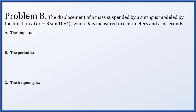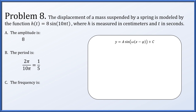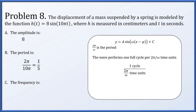Problem 8: the displacement of a mass suspended by a spring is modeled by h of t equals 8 times the sine of 10 pi t, where h is in centimeters and t is in seconds. The amplitude is 8. The period is 2 pi over 10 pi, which equals 1 over 5. The frequency is the reciprocal of the period, which is 5 cycles per second, and cycles per second is hertz.